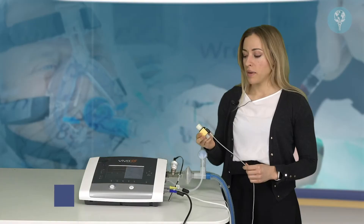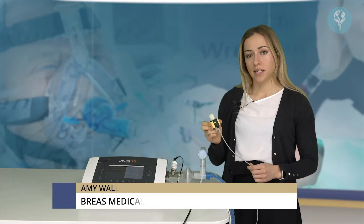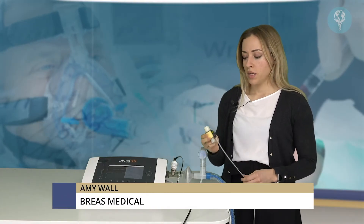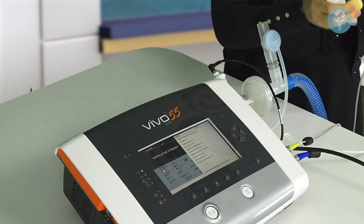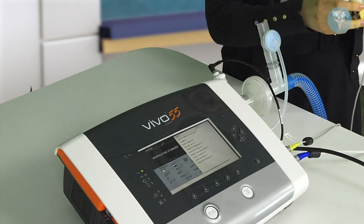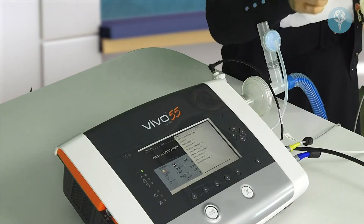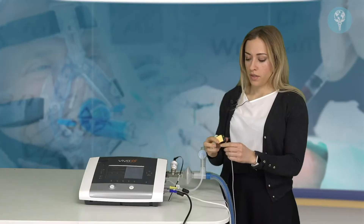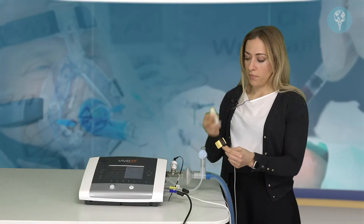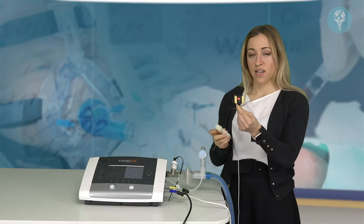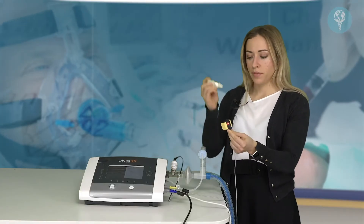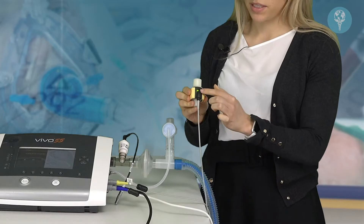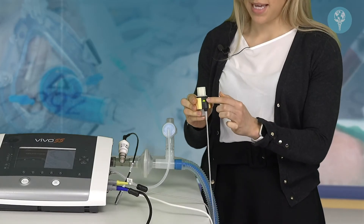In this video we're going to talk about setting up your end-tidal CO2 sensor for use. Before you can put it into the circuit and start using it, we need to zero the CO2. First, when we connect the two pieces, you'll see the red light is flashing, so we need to attach our airway adapter so we have the solid green light.